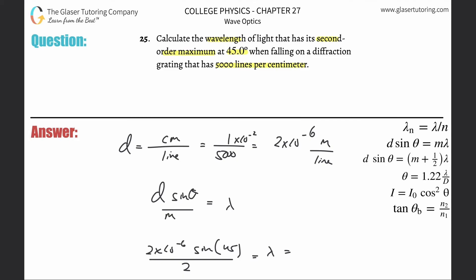Simply take out the calculator plug and chug. So this is 2 times 10 to the minus sixth, multiply by sine of 45. Make sure your calculator is in degree mode. And then divide that all by 2. And what are we going to get? 7.07 times 10 to the minus seventh meters. That's now the wavelength, about 707 nanometers.